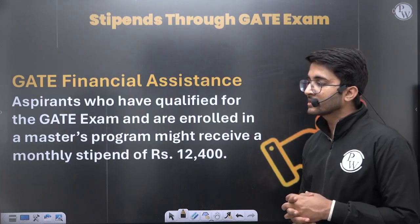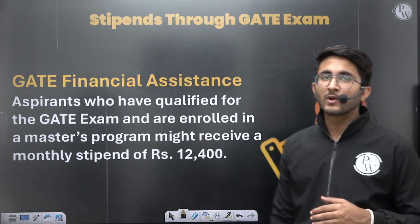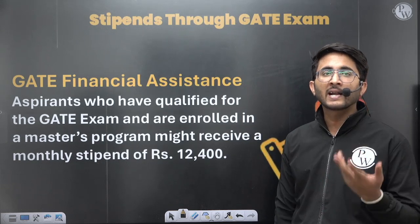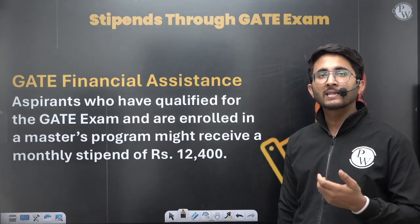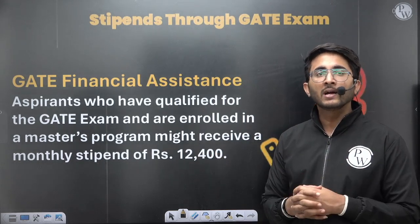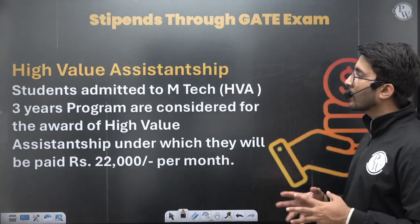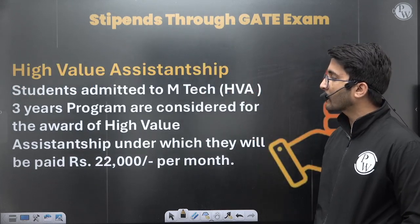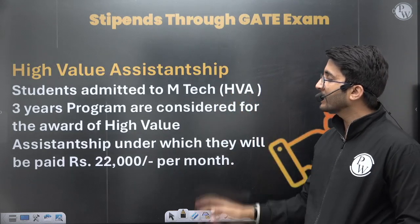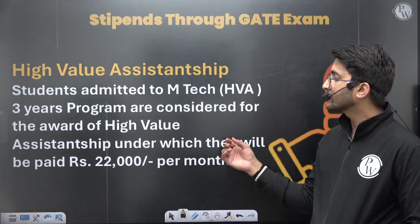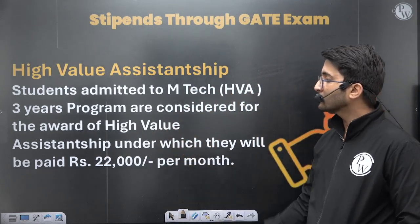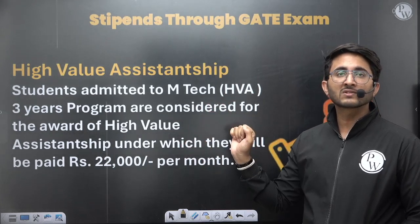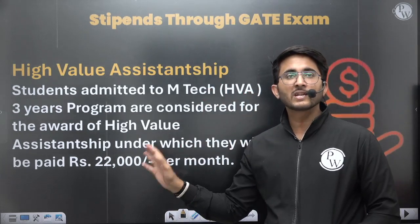Regarding financial assistantship, if you join M.Tech at IIT Madras or IIT Delhi you will receive ₹12,400 as a monthly stipend. Additionally, IIT Delhi runs a particular program called M.Tech High Value Assistantship (HVA), which is a three-year program. If you join M.Tech HVA, you will receive ₹22,000 per month as your stipend.